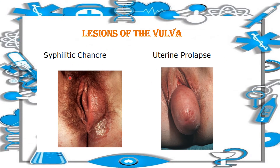Another lesion is the syphilitic chancre — a firm, painless ulcer due to primary syphilis, which usually appears after 21 days of exposure to Treponema pallidum. It may remain hidden or undetected in the vagina and usually heals regardless of treatment within 3 to 6 weeks. Another abnormality is uterine prolapse, which occurs when the uterus protrudes into the vagina.